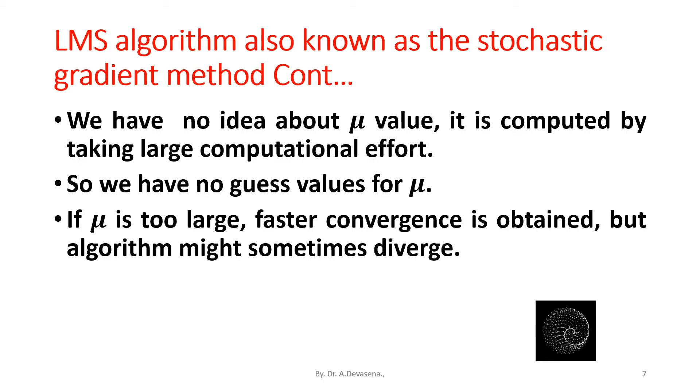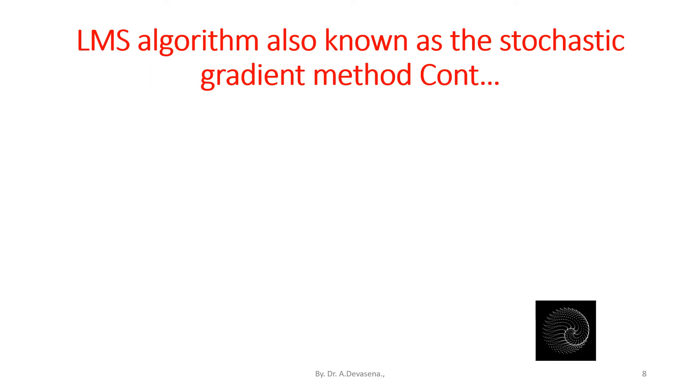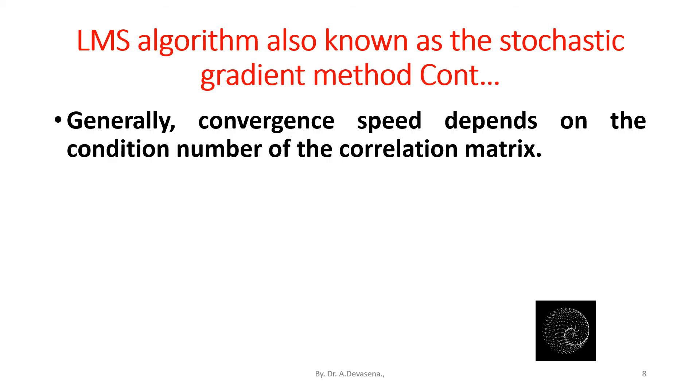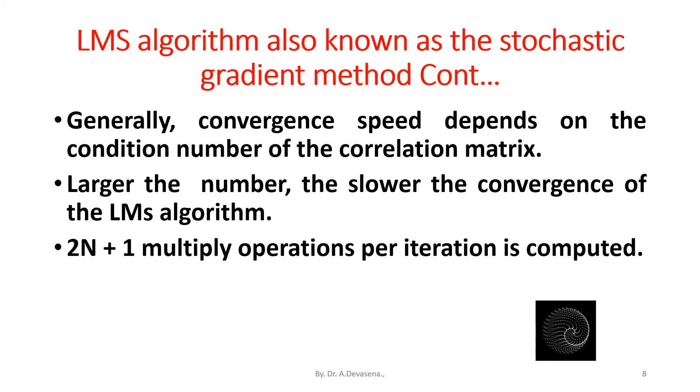If μ is too small, slow convergence is obtained. Generally convergence speed depends on the condition number of the correlation matrix. Larger the number, the slower the convergence of the LMS algorithm. 2n+1 multiply operations per iteration is computed.